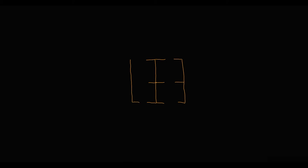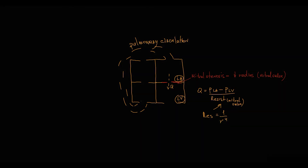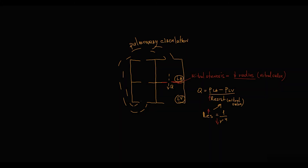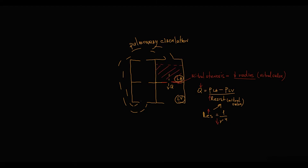To explain the mechanism of this reflex, let's take mitral stenosis — its heart, its left ventricle, its left atrium, and its pulmonary circulation. Mitral stenosis causes a decrease in the radius of the mitral valve, and flow through the mitral valve equals left atrial pressure minus left ventricular pressure divided by mitral valve resistance. Resistance is inversely proportional to the fourth power of radius, so with a decrease in radius, resistance of the mitral valve increases, and flow through the mitral valve decreases.